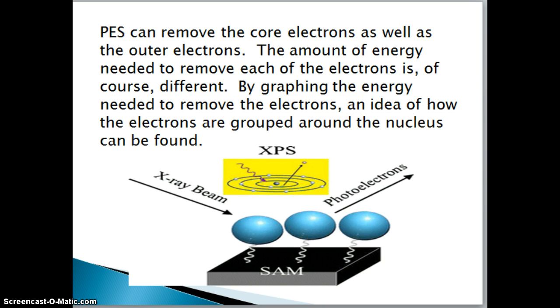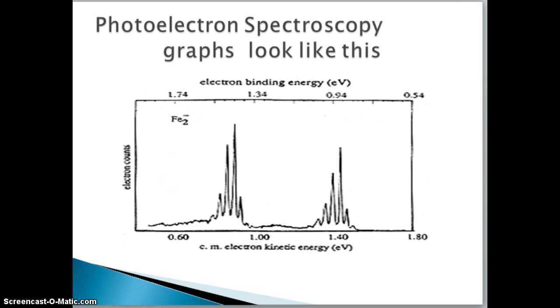A photoelectron graph looks like this. It shows the peaks that you see and the peaks are related to the amount of energy that's needed, or the binding energy that the electron has that you can see at the top.